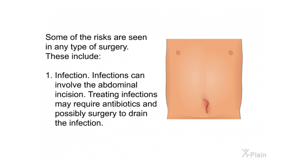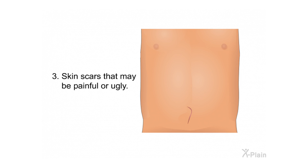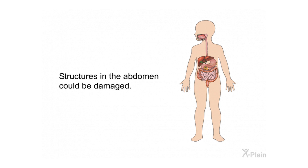Some risks are seen in any type of surgery. First, infection — infections can involve the abdominal incision, and treating them may require antibiotics and possibly surgery to drain the infection. Second, bleeding either during or after the operation, which might cause bluish discoloration of the skin. Third, skin scars that may be painful or unsightly. Other risks and complications are related specifically to this surgery — these are rare, but it is important to know about them. Structures in the abdomen could be damaged.